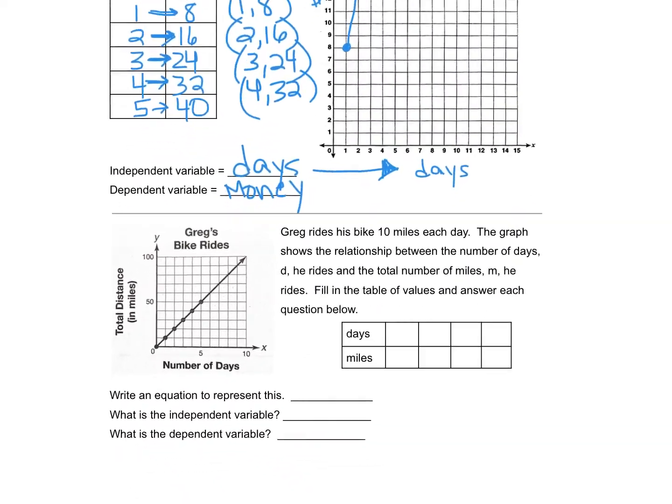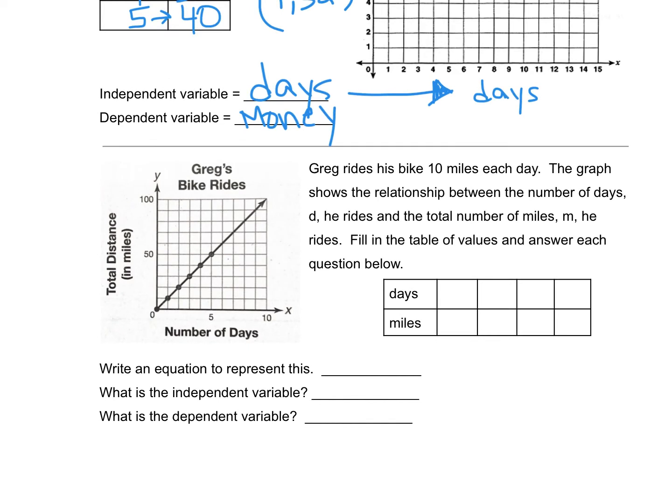All right, we've got one more example we're going to go through here. Here we've got a graph to start with about Greg and his bike rides. Notice on the x-axis, they're showing us the number of days. The y-axis is the total distance in miles. Read along with me. Greg rides his bike 10 miles each day. The graph shows the relationship between the number of days, d, he rides, and the total number of miles, m, he rides. Fill in the table of values and answer each question below.